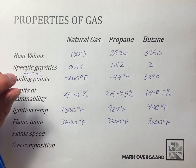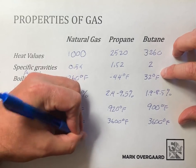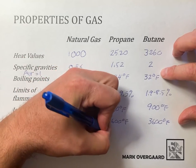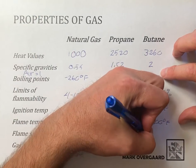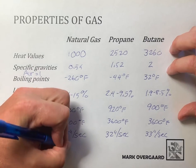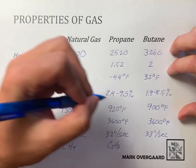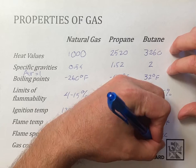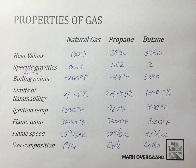Flame speed — how fast does the flame burn back toward the source? For natural gas it's 25 inches per second, propane is 32 inches per second, and butane is 33 inches per second. Last but not least, gas composition — we already covered that: natural gas is CH4, propane is C3H8, and butane is C4H10.